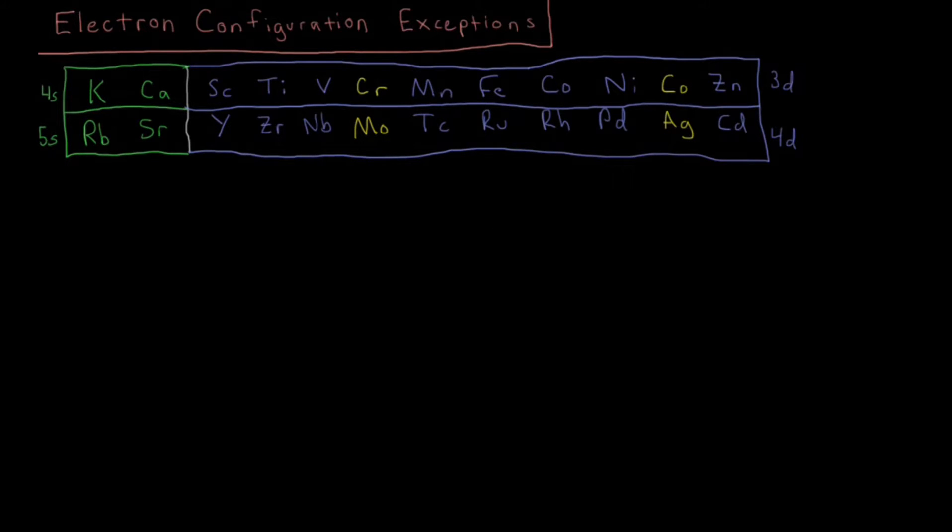And if we have the configuration of potassium, we'd start by saying that's argon, the noble gas from the third row which ends over here in the P block. Then starting the fourth row, we have potassium, which has argon's configuration with a 4S1 added to it. Then for calcium beyond that, we just add that second electron into the 4S orbital, so we have 4S2.